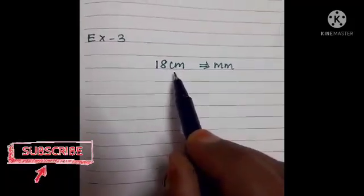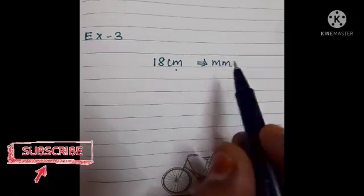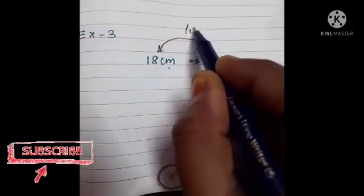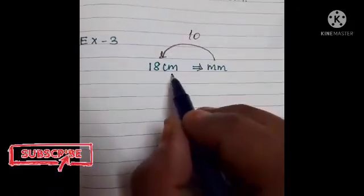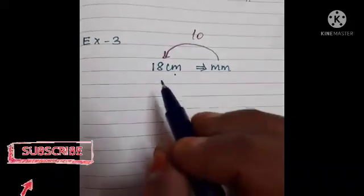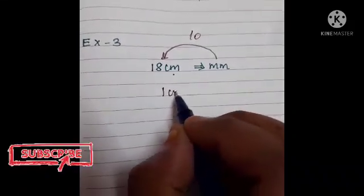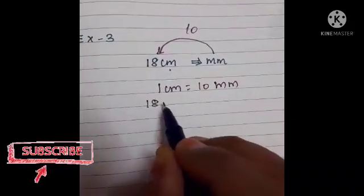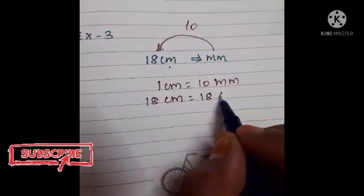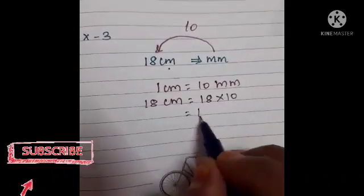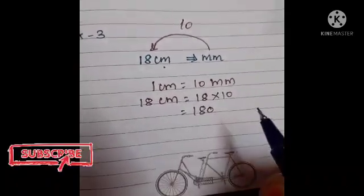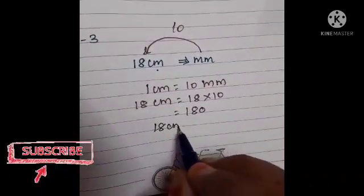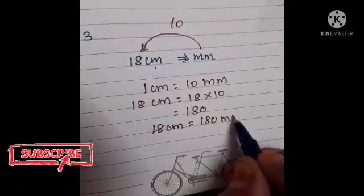The third example is converting centimeters into millimeters. We know that one centimeter is 10 millimeters, so to convert bigger unit to smaller unit we multiply by 10. Therefore, 18 centimeters multiplied by 10 equals 180. So 18 centimeters is equal to 180 millimeters.